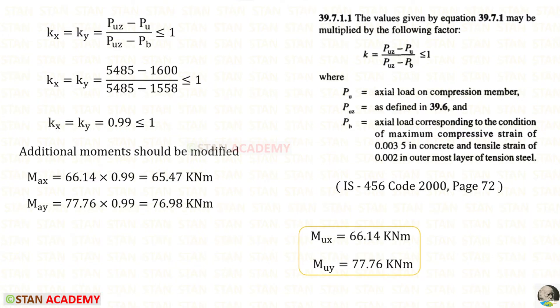Now, we have to take this code book. Open the page number 72. From that, we can copy this. PUC, we have calculated. PU is given in the question, 1600. PB, just before we have calculated. For KX and KY, we will get 0.99.